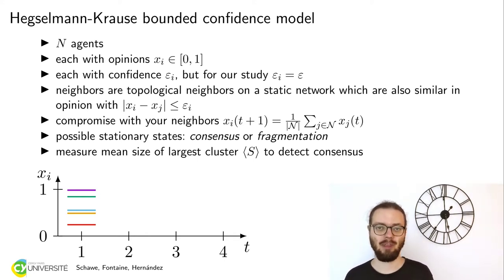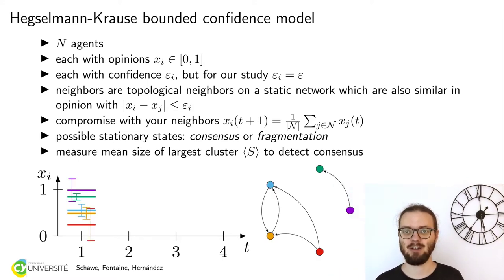The most important thing about the Hegselmann-Krause model is that it's the so-called bounded confidence model. So the homophily is implemented as a threshold value. Each agent can have some confidence, which is now shown as the error bars, and it can only interact with those which are within confidence. Each agent could have his own confidence, but in our case, we are for simplicity restricting ourselves to a homogeneous society where every agent has the same confidence.